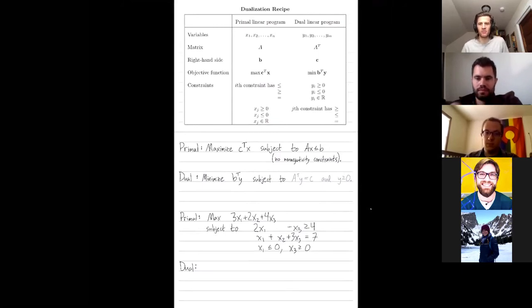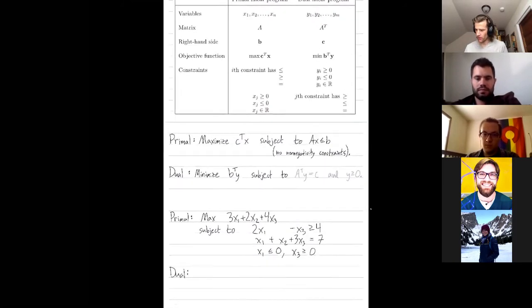So here's a specific problem with numbers. You'll notice that some of my constraints are equalities. Some are not. Some of my variables are non-positive. Others are non-negative. And others are unbounded. There's no bound on variable x2.